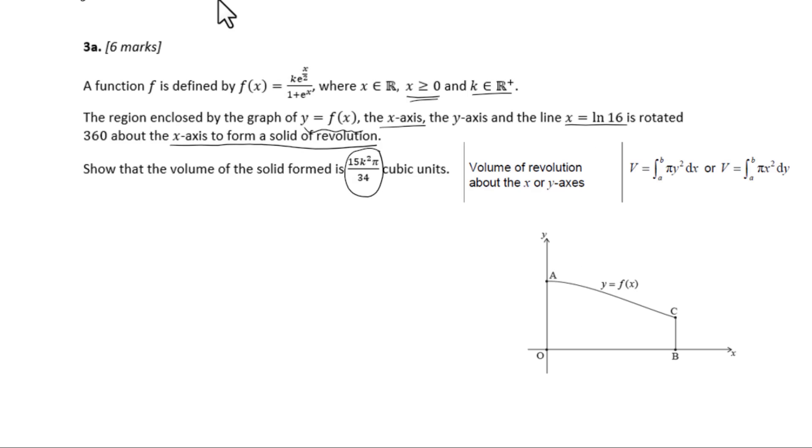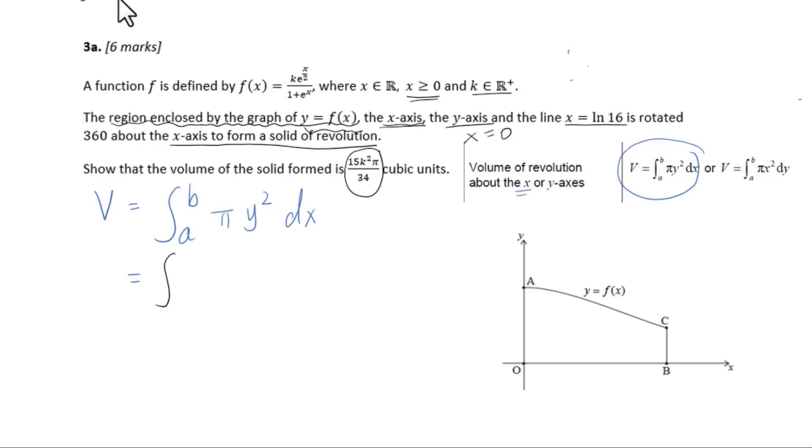From the formula booklet, the volume of revolution about the x-axis is this formula. The volume equals integral from a to b, pi y squared dx, which equals integral from 0 to natural log of 16, pi times k e to the x second power over 1 plus e to the x power, then square dx.